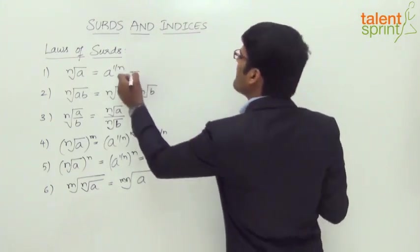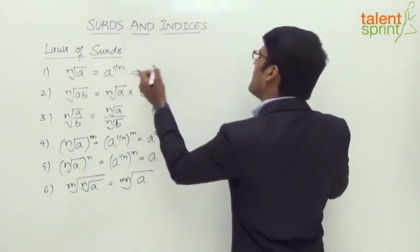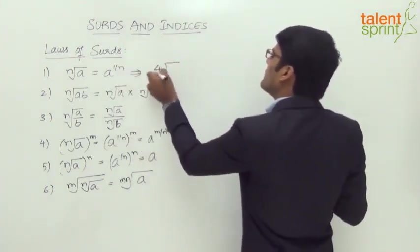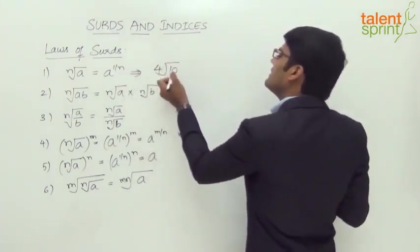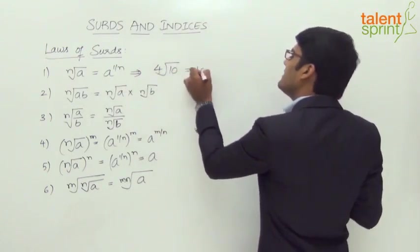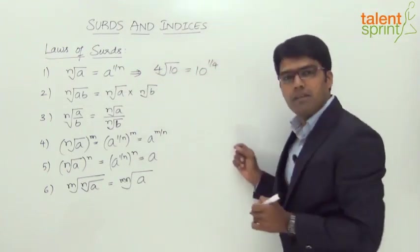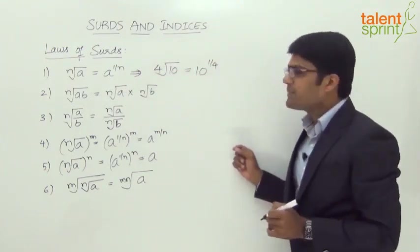For example, the fourth root of 10 can be expressed as 10 to the power of 1 by 4.